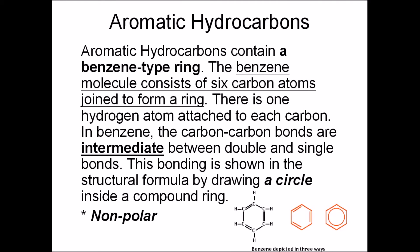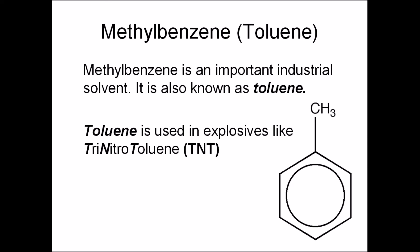A benzene ring has single and double bonds, and this kind of bonding is called an intermediate bond. There's a diagram of a benzene molecule shown here. Methyl benzene is an aromatic hydrocarbon and it's used in explosives like TNT.